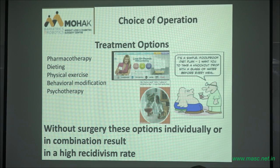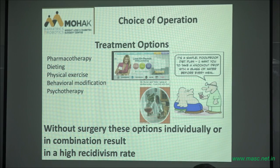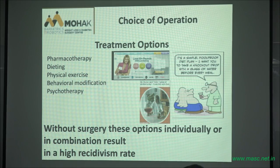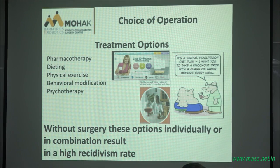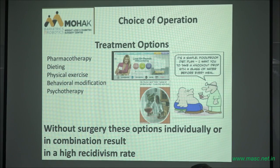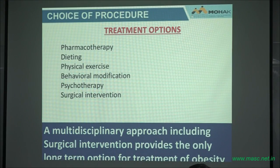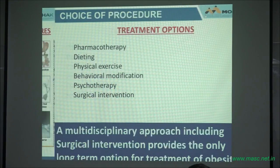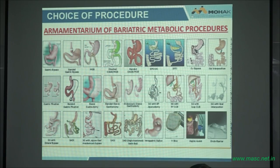The only effective modality available at this time, with long-term follow-up of more than a year, is surgery. But surgery cannot be done alone — it has to be done in a multidisciplinary setup, using the backup of all the other adjunctive modalities. A multidisciplinary approach has to be used for managing obesity.